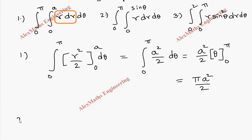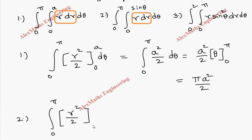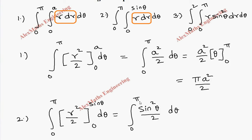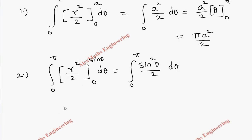Coming to question number 2, first we have to integrate with respect to r. As usual it is r² / 2. We have the outer integral 0 to pi, and we apply the limit from 0 to sinθ, then dθ. When we put the limit this becomes sin²θ / 2, and we still have dθ and the integral 0 to pi.